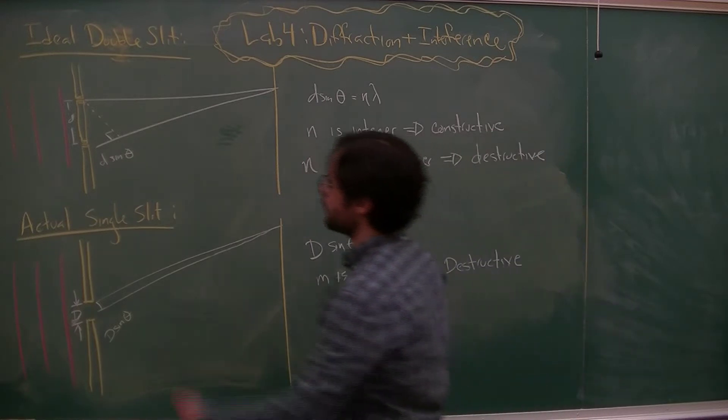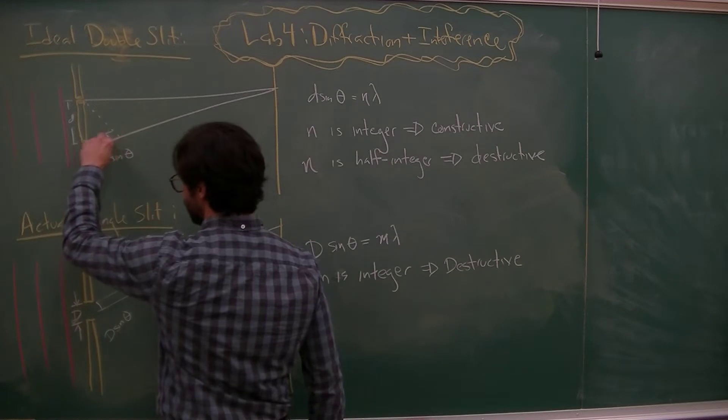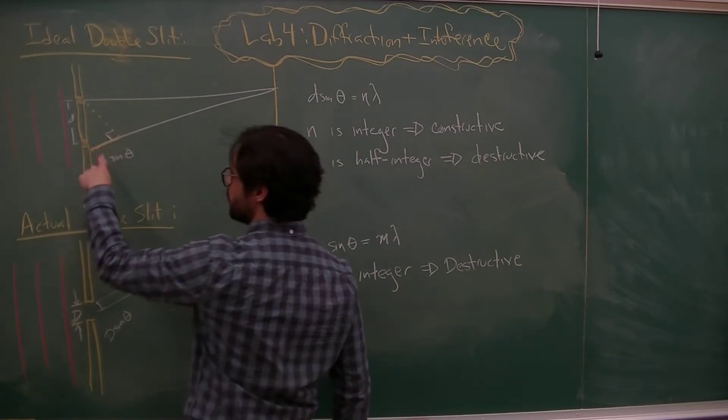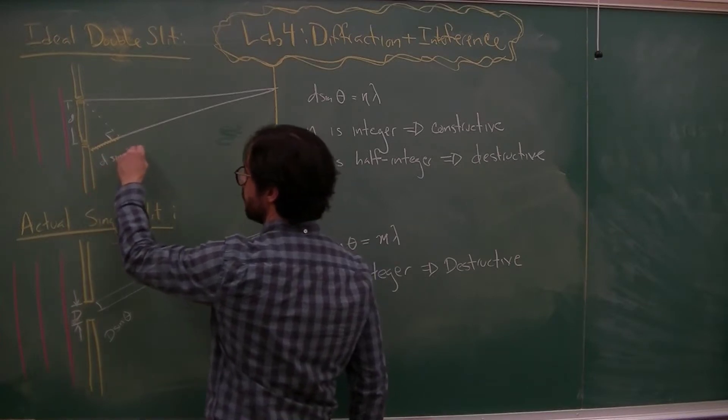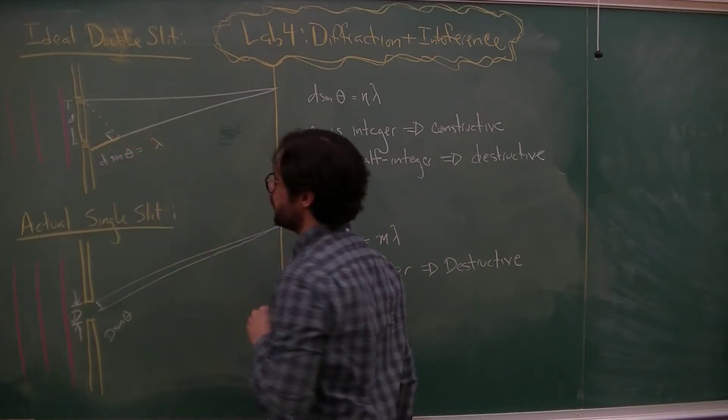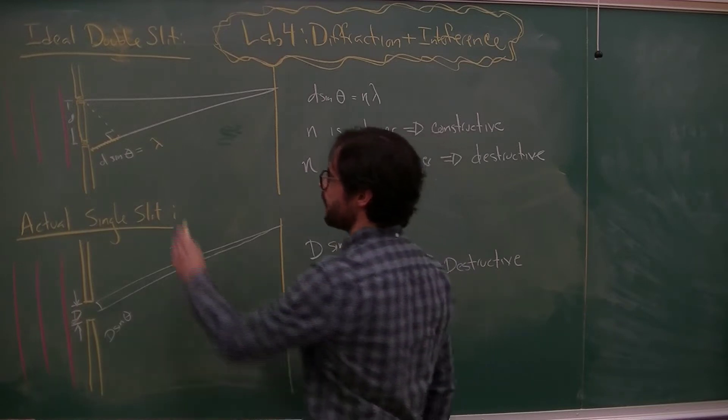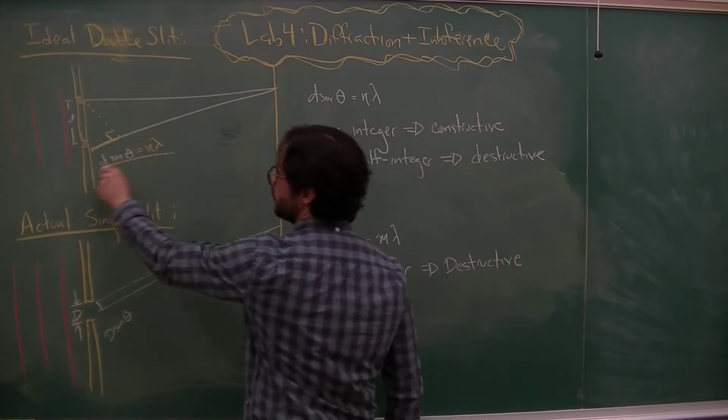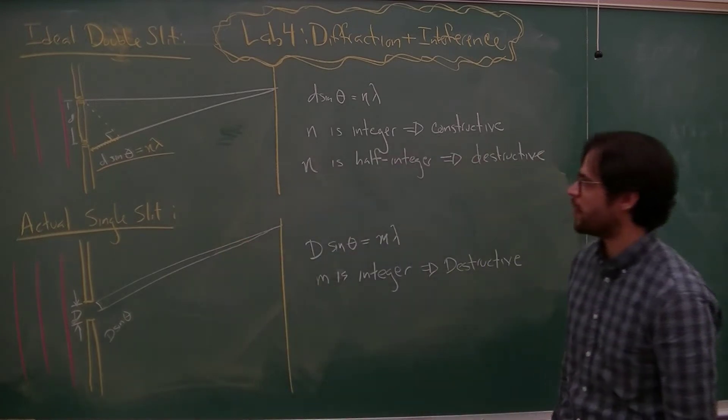So the full details of the derivation hopefully should be gone over in lab. But basically, this little piece of extra length traveled d sine theta will tell you if you get destructive or constructive interference based on how many multiples of the wavelength it is. So d sine theta equals n lambda is the fundamental equation that describes double slit interference.